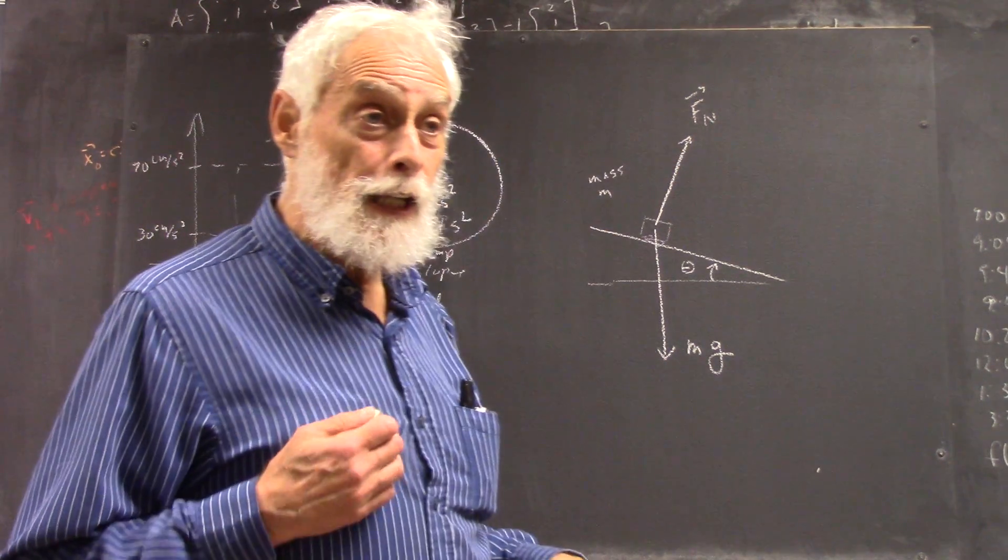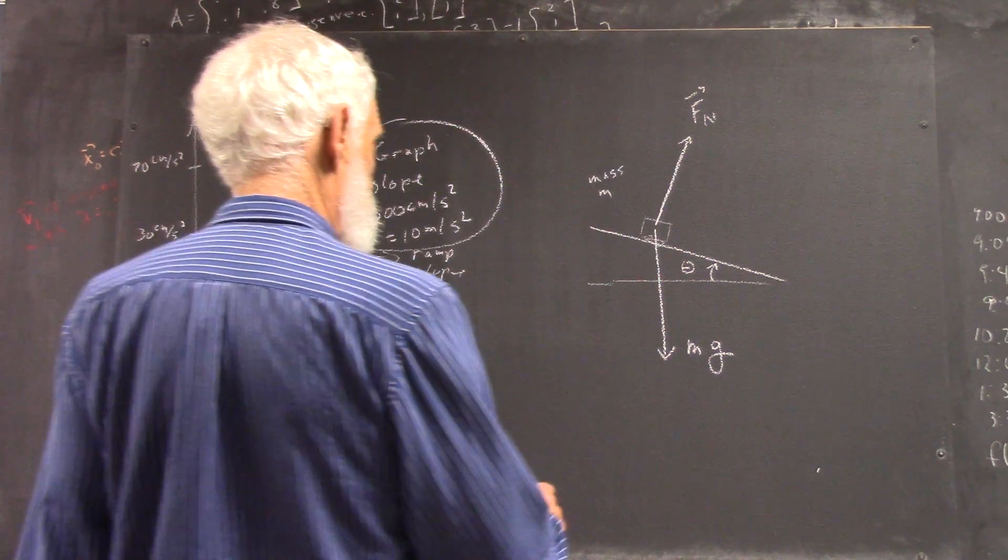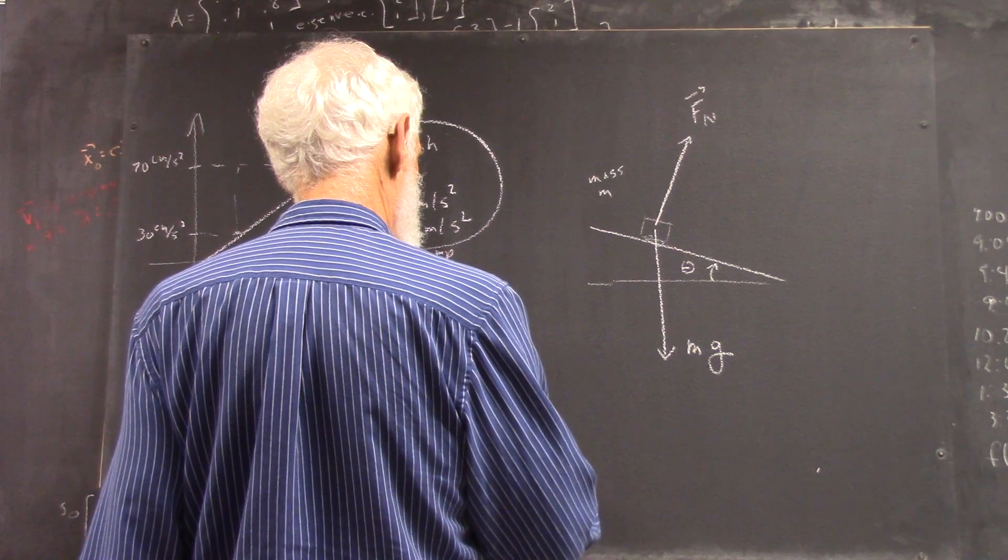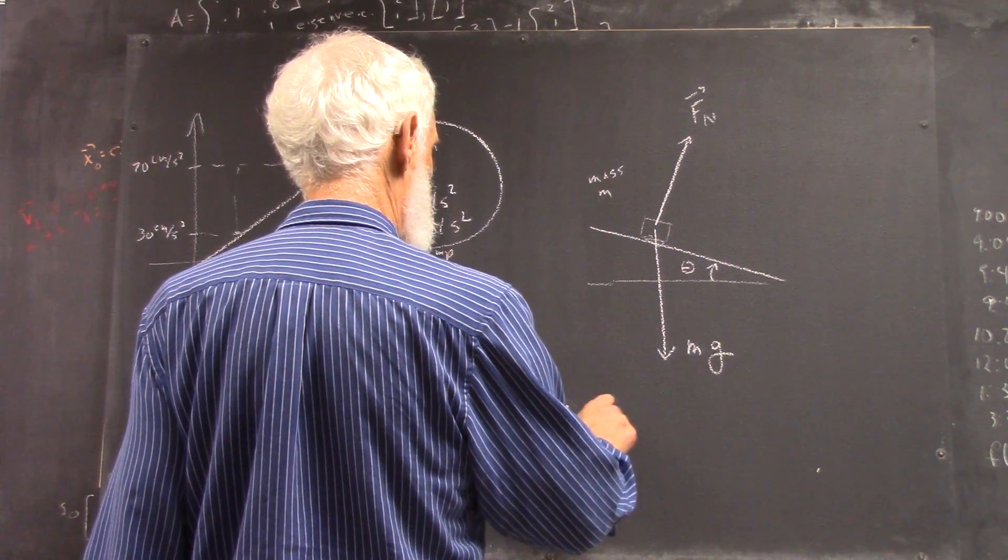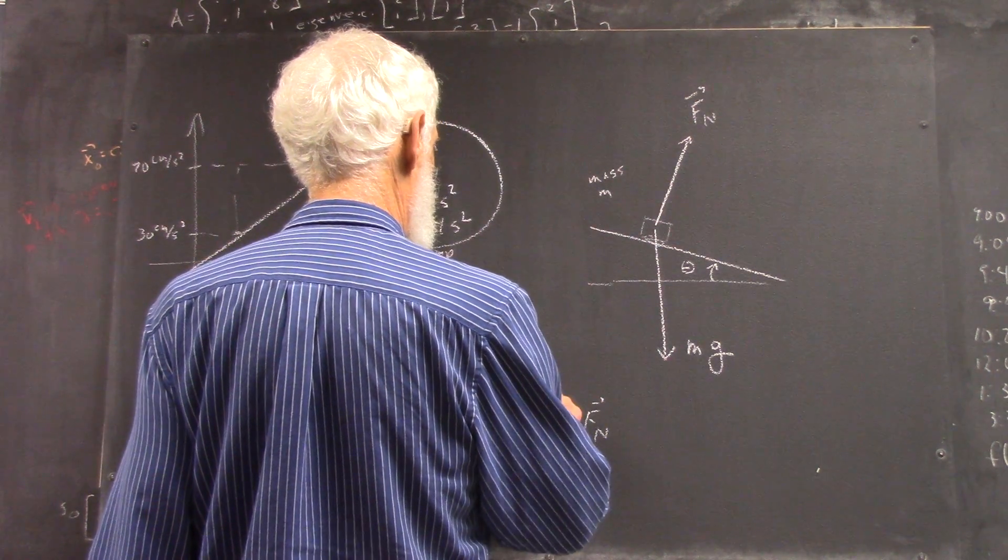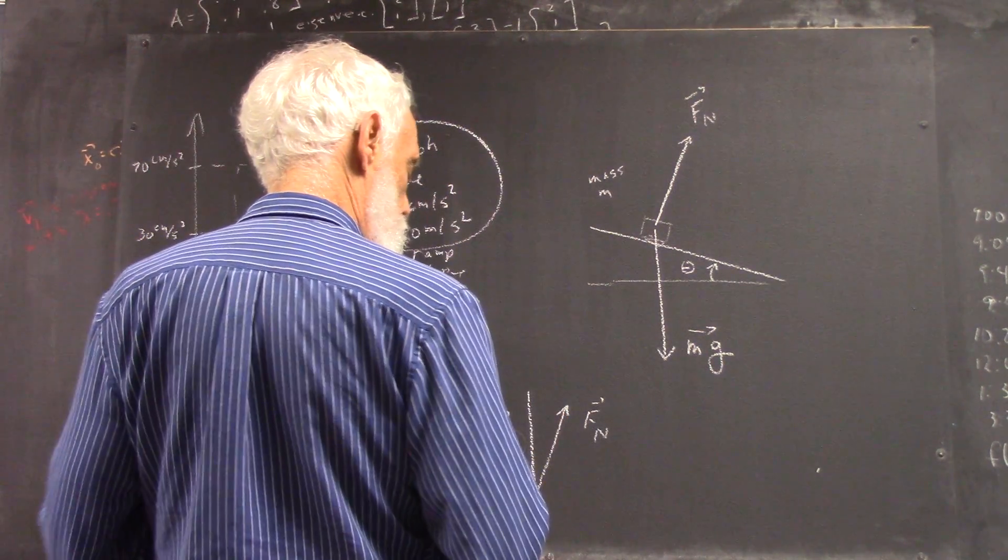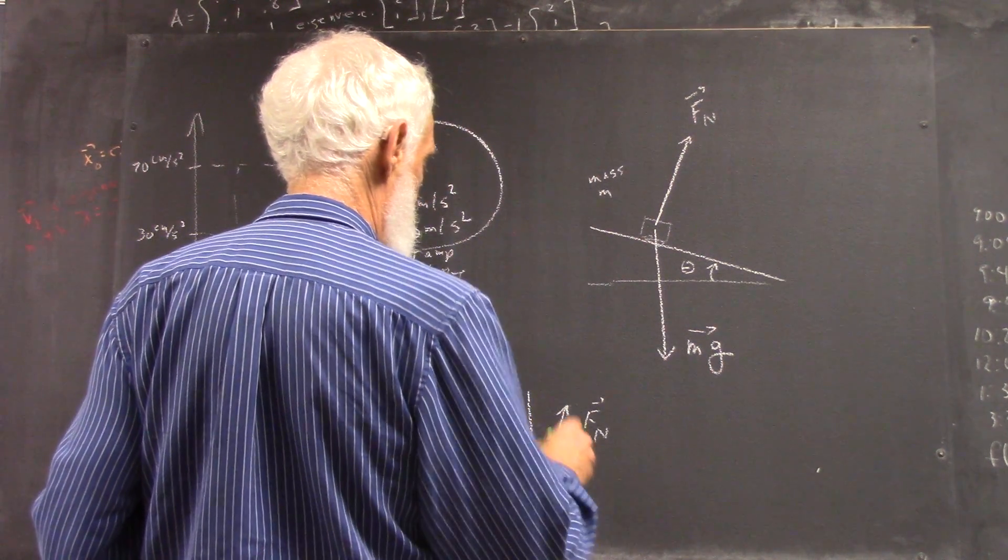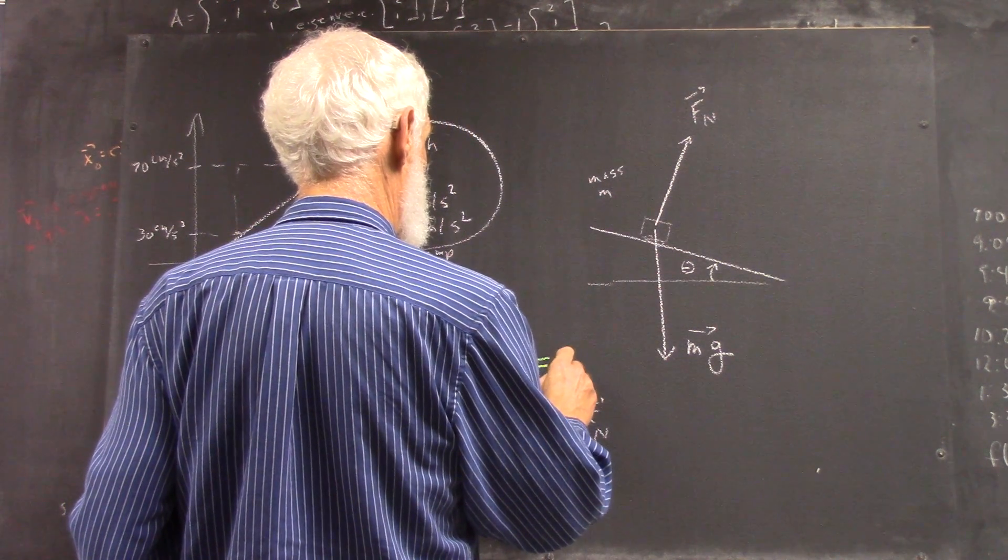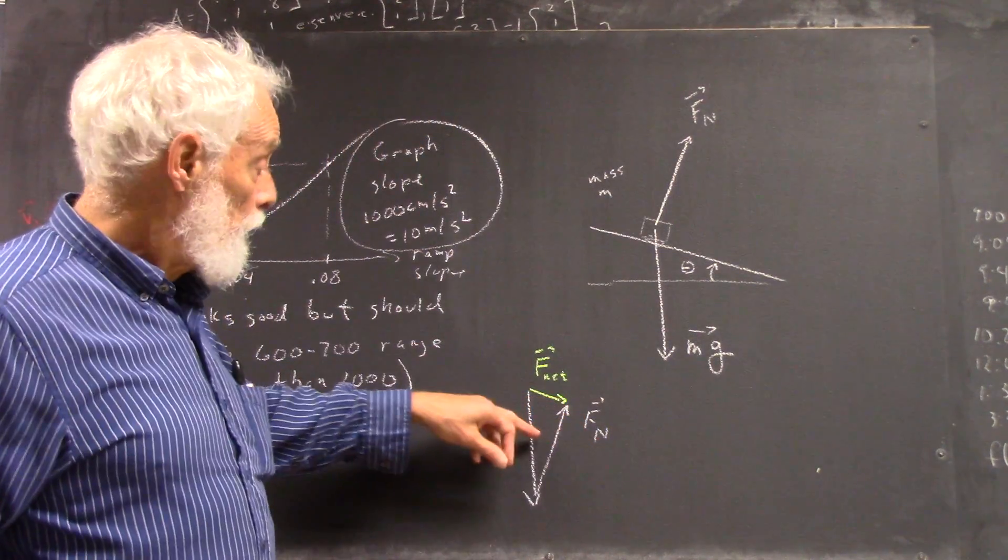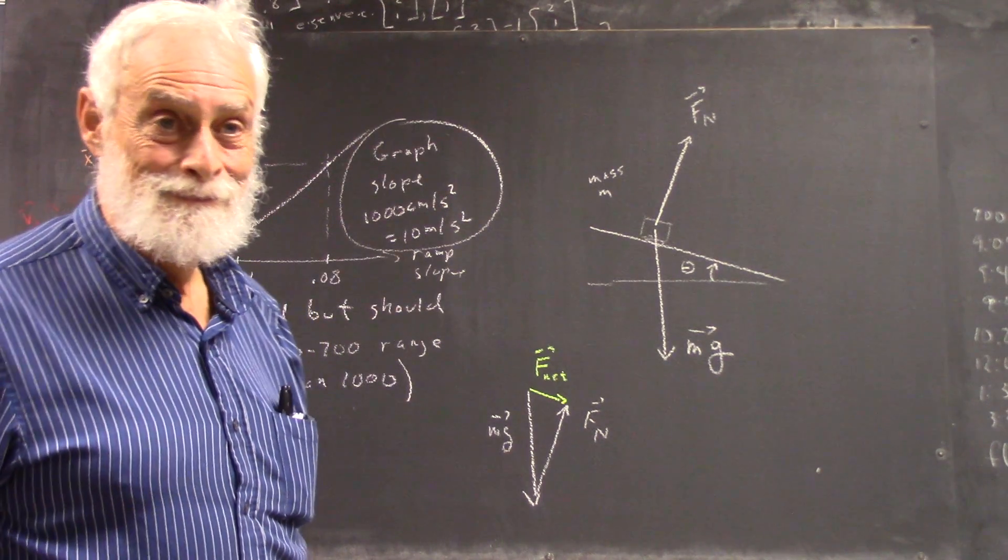So, if these are the only two forces acting, well, the resultant of these forces is, we just put them head to tail. Now, you've got mg down here, and you've got this one here, and I'll put an arrow over that, and you have the resultant of these forces. And that force happens to be straight down the incline.